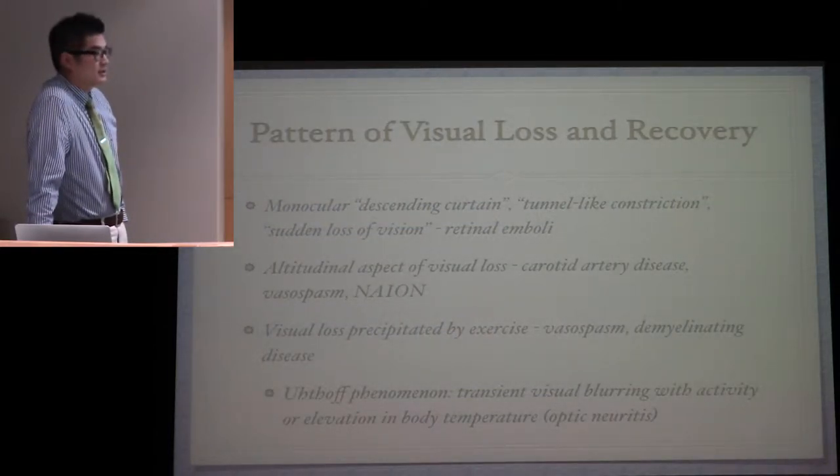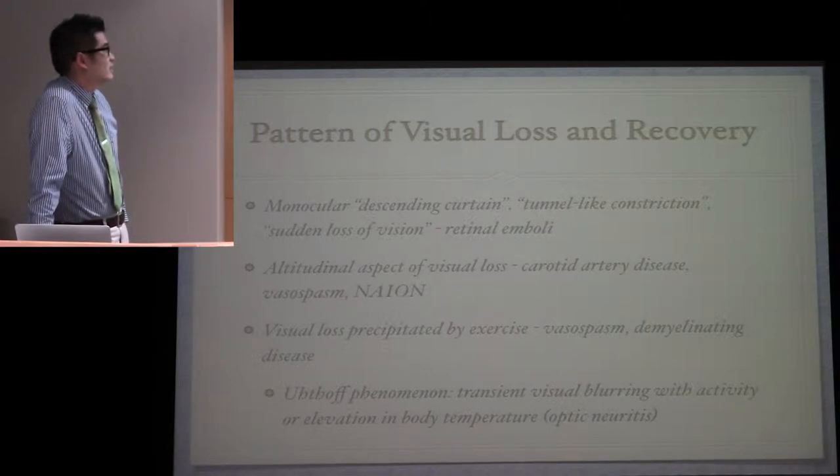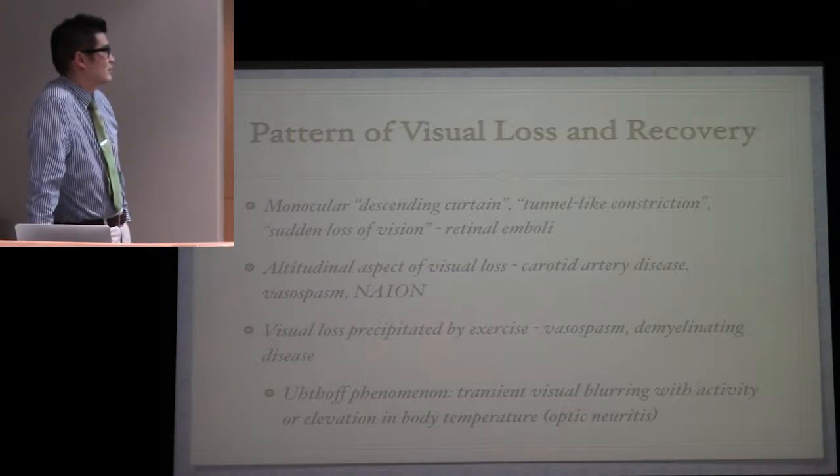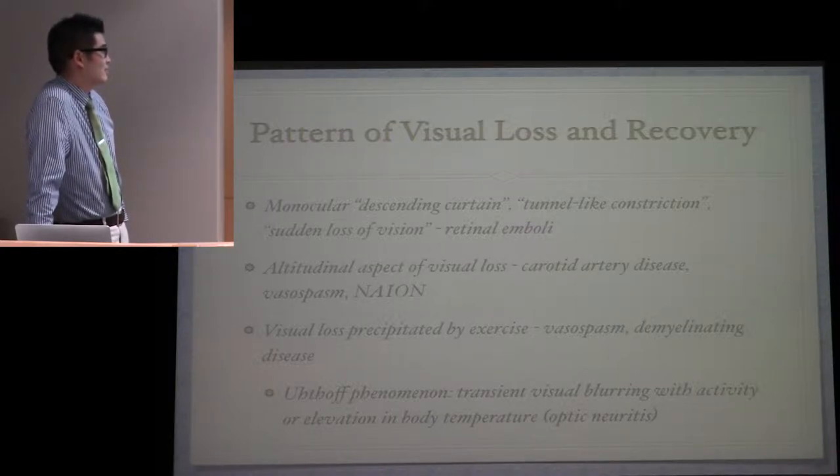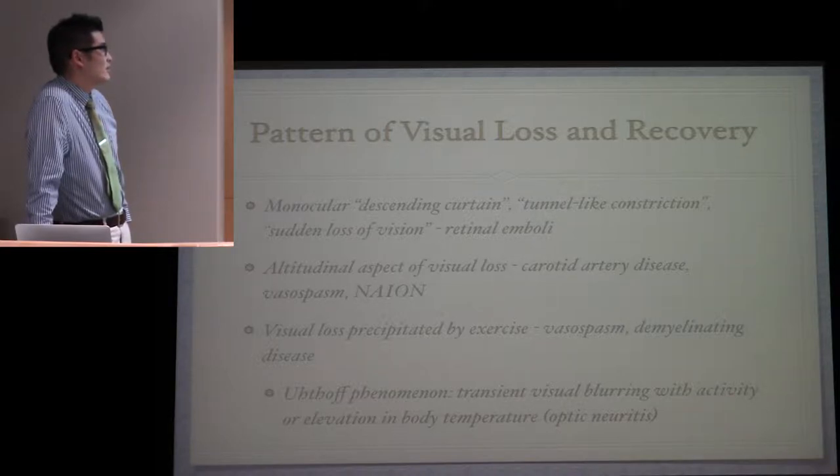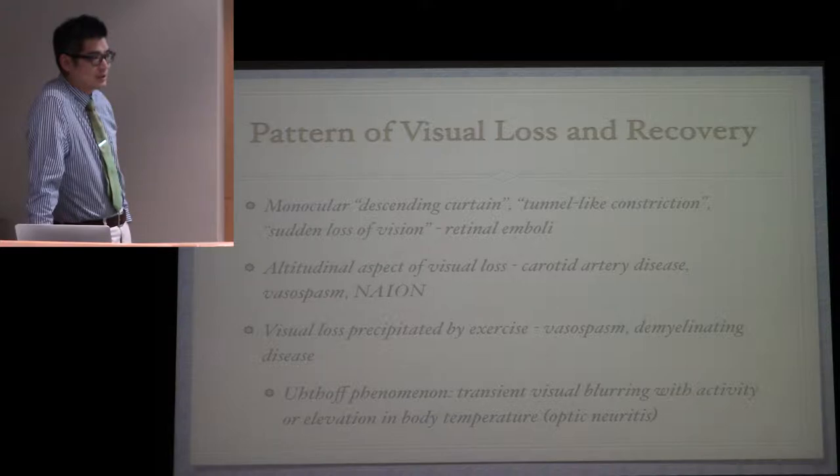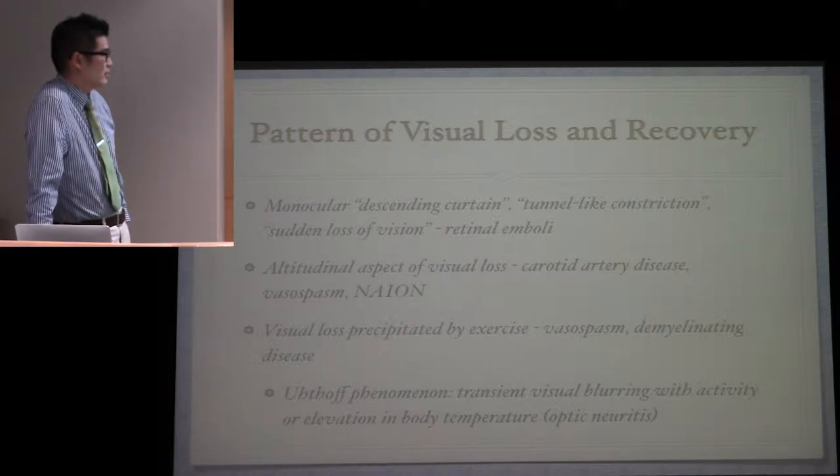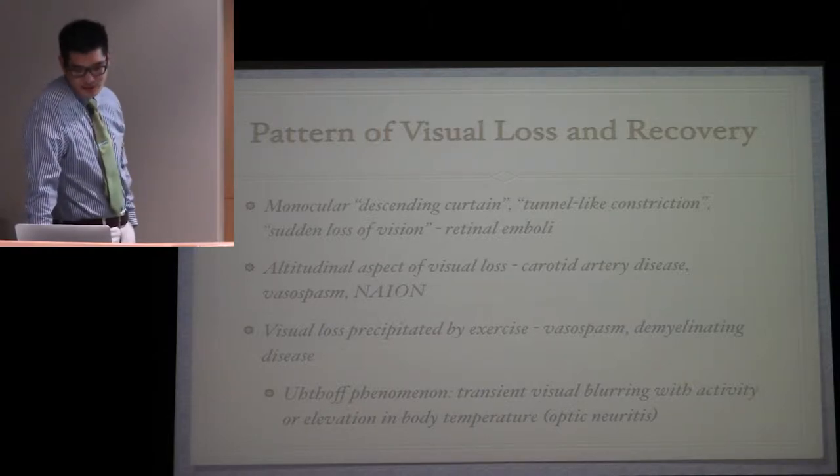Pattern of visual loss and recovery is also important. Monocular descending curtain, tunnel-like constriction, sudden loss of vision - think about retinal emboli. Altitudinal aspect of visual loss - think about carotid artery disease, vasospasm, or NAION. Vision loss precipitated by exercise - think about vasospasm and demyelinating disease. Uhthoff's phenomenon is typically seen in patients with demyelinating disease where they get transient visual blurring with activity or elevation in body temperature.